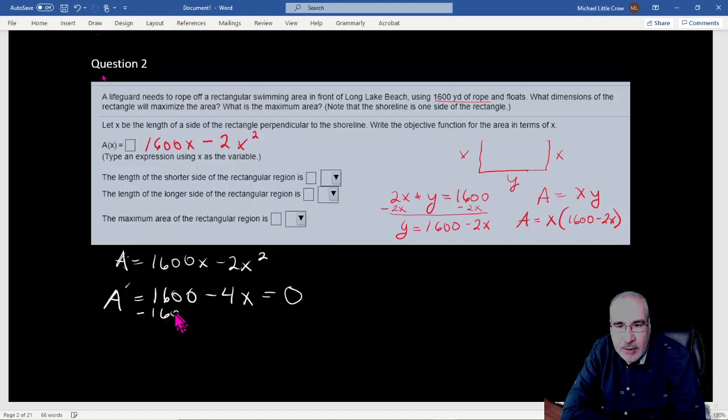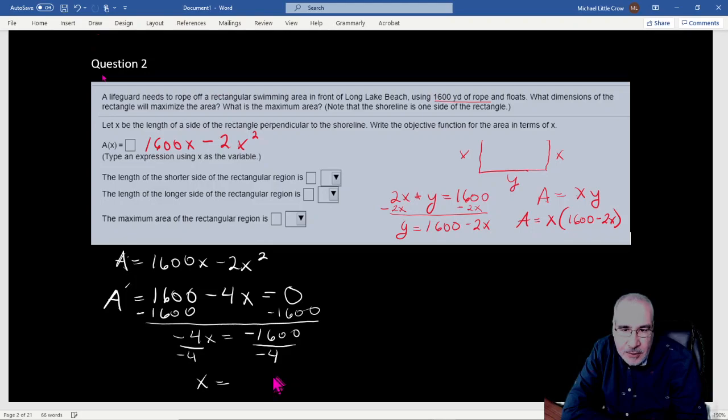So then we solve this one. Let's subtract 1600. We get minus 4x equals negative 1600. Divide by negative 4. So we get that x equals - 4 goes into 16, negative times negative is positive - so that's 400. x should be 400.